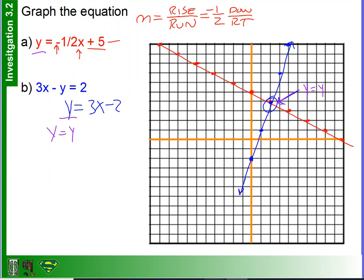So, in that case, what does this y right here equal? Well, this y is equal to negative one-half x plus 5. Alright, well, what does this y equal? Well, that y is equal to 3x minus 2.